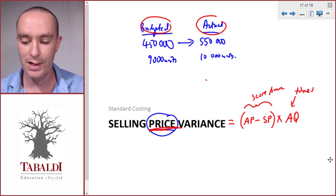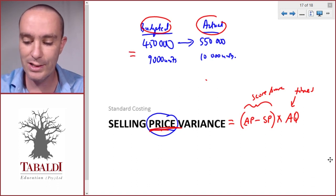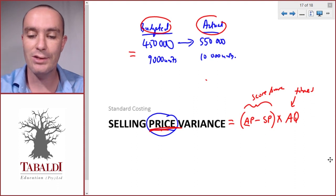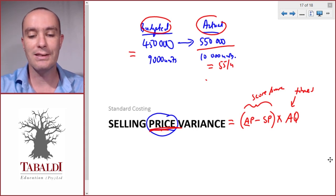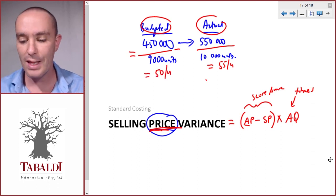We want to know how much did we score or save and how many times did we save that specific value. So how many units did it apply to? We first need to calculate our actual price and standard price. Our actual price would be actual sales divided by actual units, which is 55 per unit. Our budgeted selling price would be budgeted sales divided by budgeted units, so that's 50 per unit.